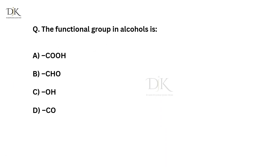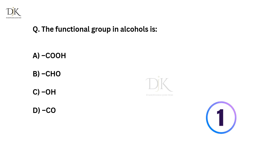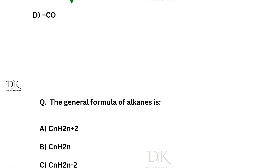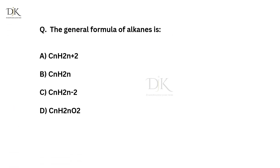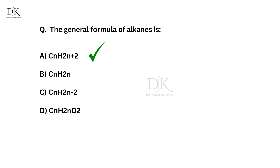The functional group in alcohols is? The right answer is OH. The general formula for alkanes is CnH2n+2.